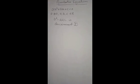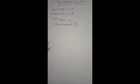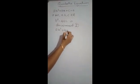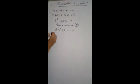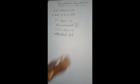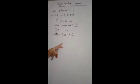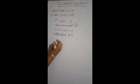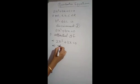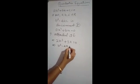Now let's see the types of quadratic equation. The quadratic equation which is in the form ax squared plus bx is equal to 0 is known as the ad-factor quadratic equation. Example: 2x squared plus 3x is equal to 0; x squared minus 4x is equal to 0.